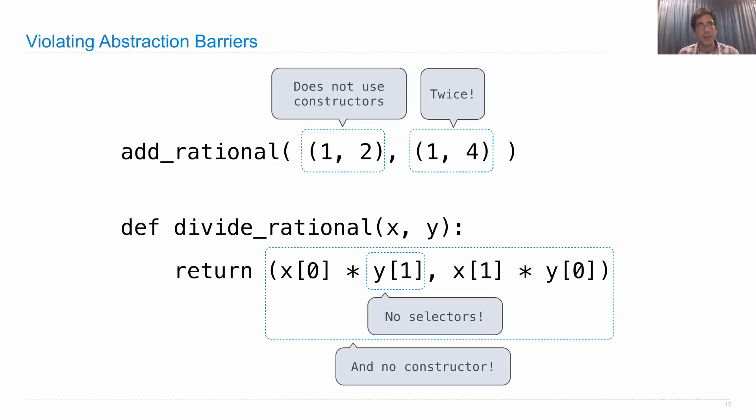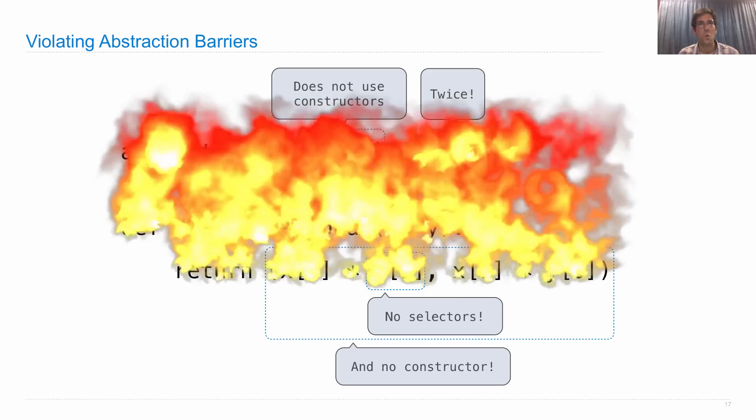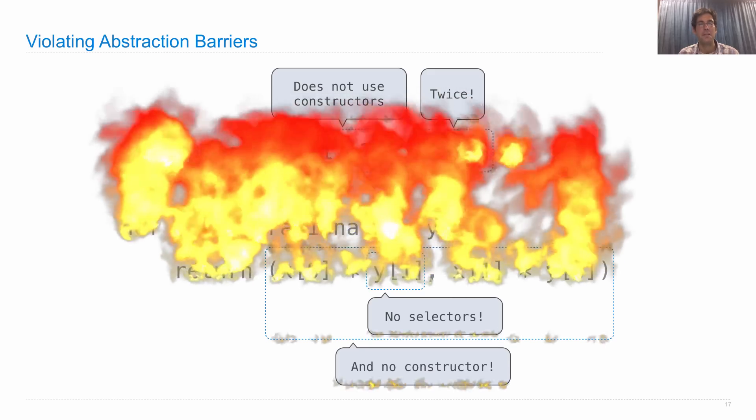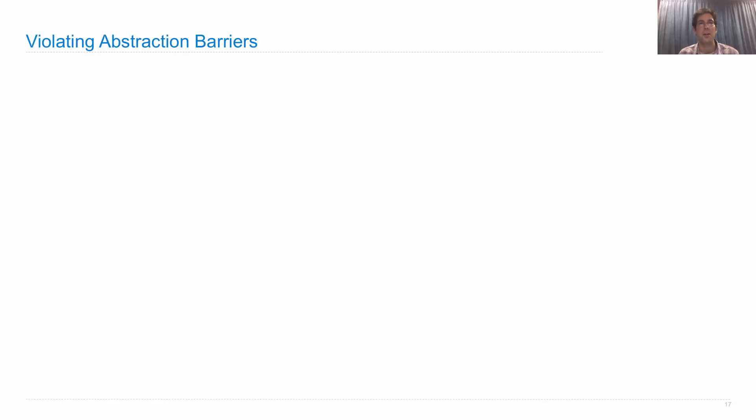It also makes your professor very upset. Do not violate abstraction barriers. If you do, and I see you doing it, I will take the piece of paper you're writing on or the computer you're using and I will personally light it on fire. And watch it burn. Because if you violate abstraction barriers, your code will burn.